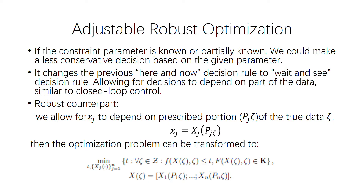We now talk a little about adjustable robust optimization. Before this, we discussed that the constraint parameter u is not known before our decision, so our decision must be guaranteed to satisfy all possible constraints. But if we already know the constraint parameter, or partially know it, we can make a less conservative decision based on the given parameter. This changes the previous here-and-now decision rule to a wait-and-see decision rule, which allows the decision to depend on part of the data.